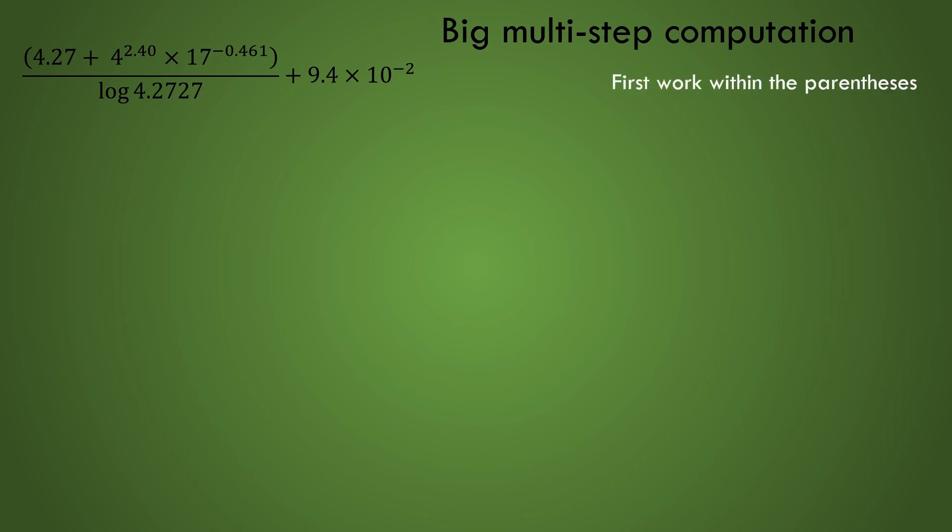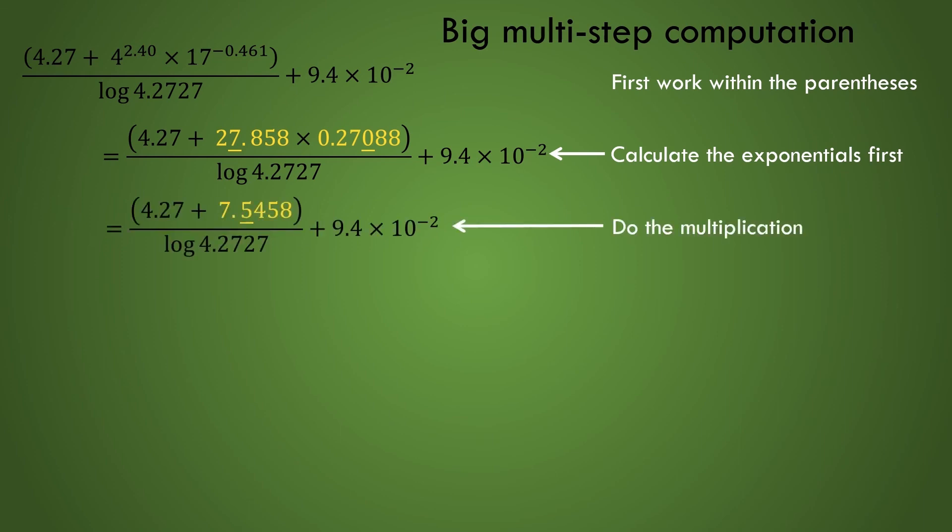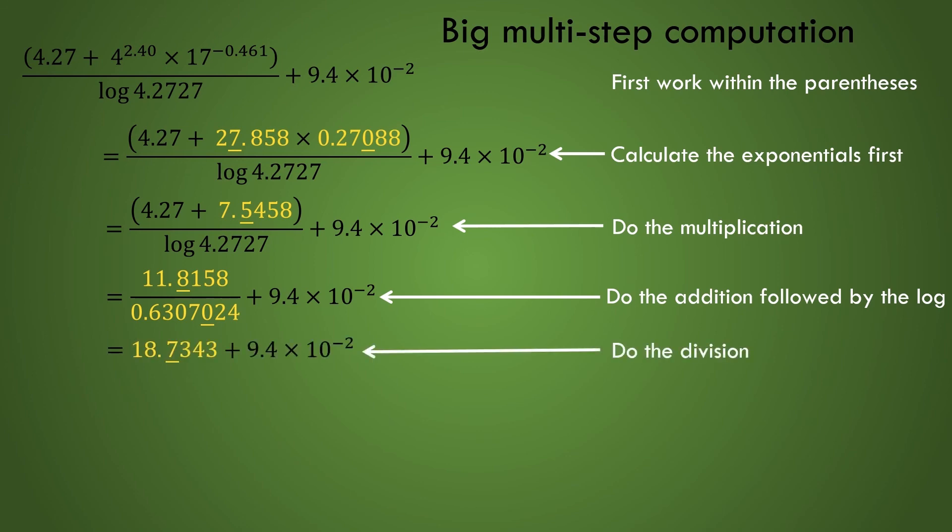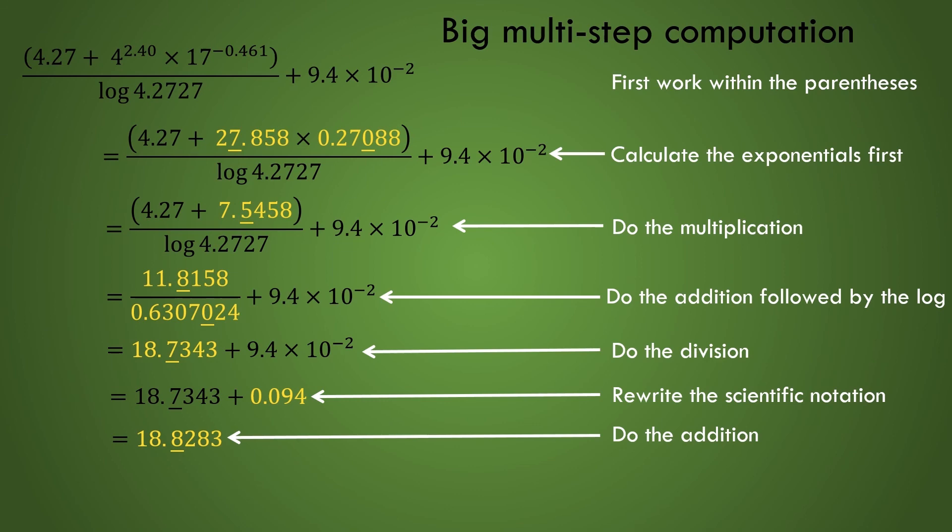We first work within the parentheses and do the exponential computation. Now we will do the multiplication. Next comes the addition, followed by the log. Now it's time to divide. We rewrite the scientific notation to make the next calculation easier. We're close to being done. We can now do the addition. And finally, we round off to the appropriate sig figs, giving us 18.8 as the final answer.